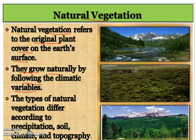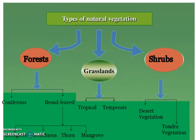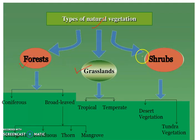Natural Vegetation appears naturally according to different climatic conditions. The types of Natural Vegetation differ according to precipitation, soil, climate, and topography. Precipitation means different amounts of rainfall, and topography means the nature of land. We can broadly classify Natural Vegetation into three parts: first, Forests; second, Grasslands; and third, Shrubs.